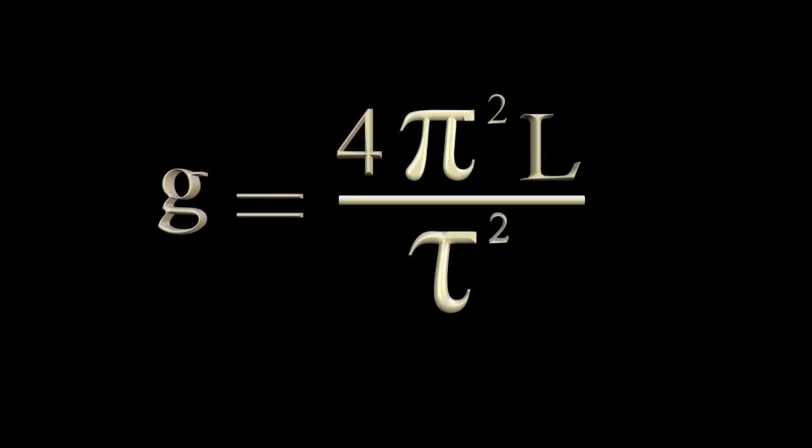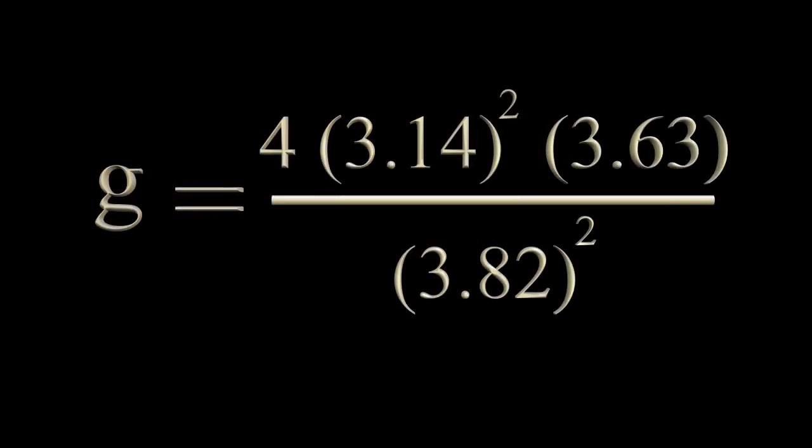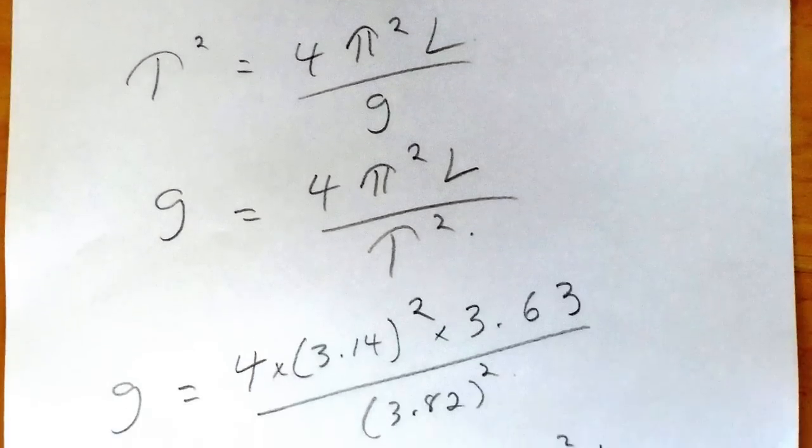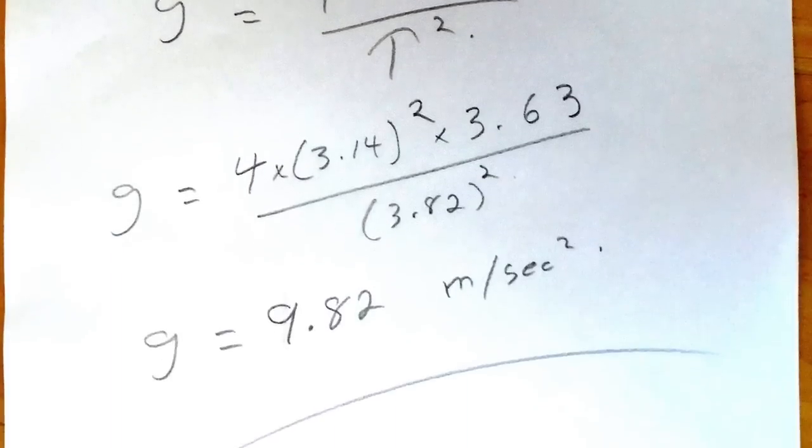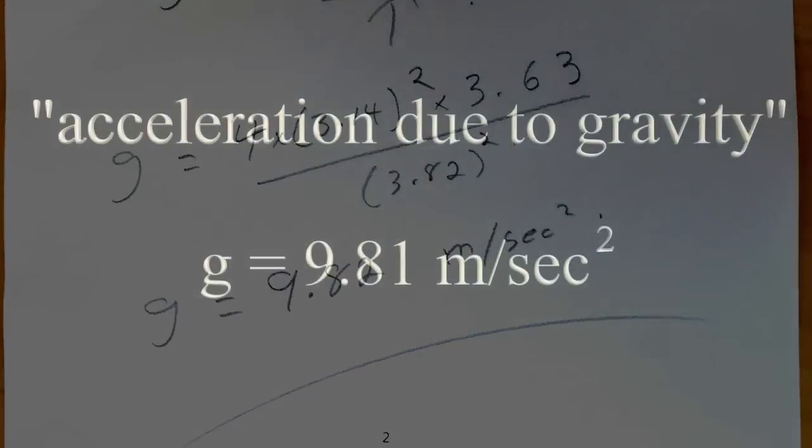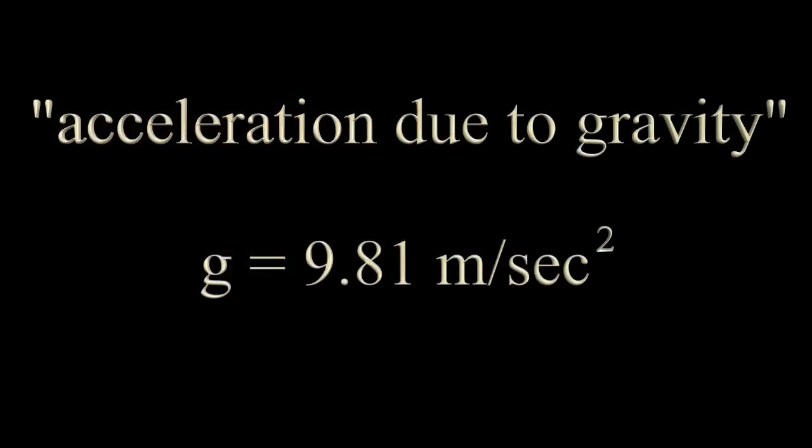Substituting 3.63 for length and 3.82 for period into the formula, we can solve for g, acceleration due to gravity. Working through the numbers gives us an answer of 9.82 meters per second squared. Our results are very close to the standard or average value of 9.81.